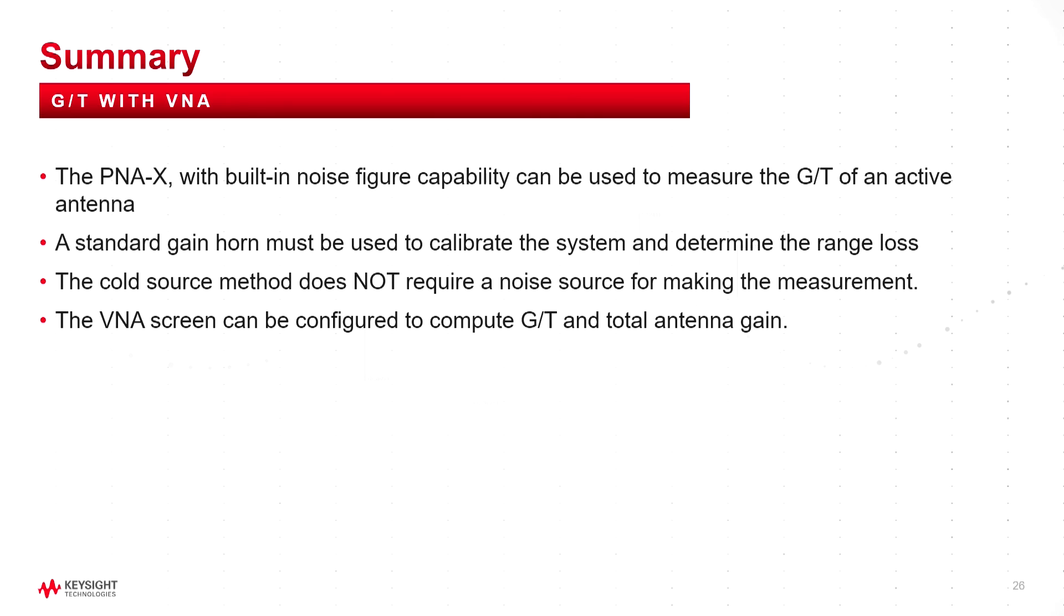So in summary, we can make, if you have a network analyzer that can make noise power measurements, you can make G/T measurements of an active antenna. The standard gain horn is the key to calibrating the system. And uncertainty in the standard gain horn will be uncertainty in the G/T measurement. This cold source method does not require a noise source of any kind, either for calibration or for measurement. And we can configure the VNA screen to directly measure G/T. And it turns out after some offline discussions with Professor Rubies, we both come to the conclusion that G/T is the only effective measurement of the quality of an electronic antenna receiving a signal. Thank you.